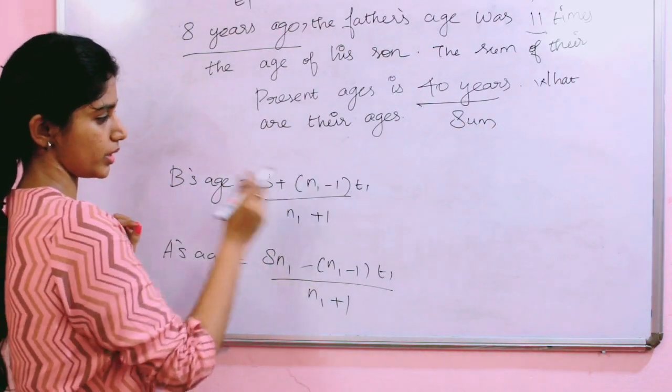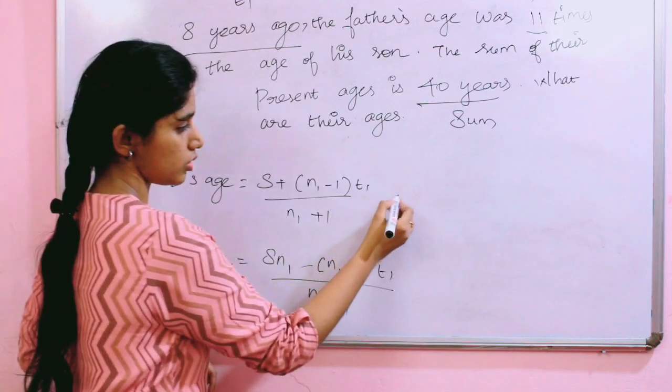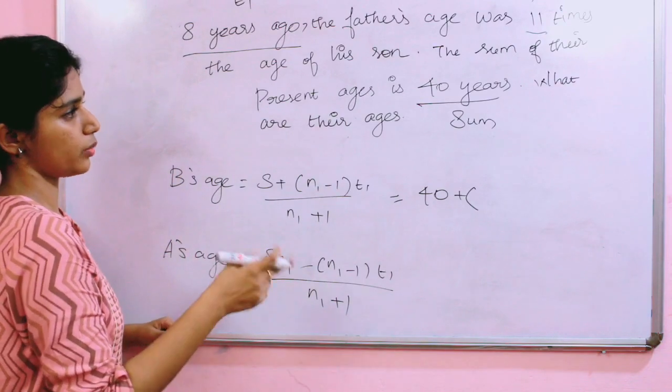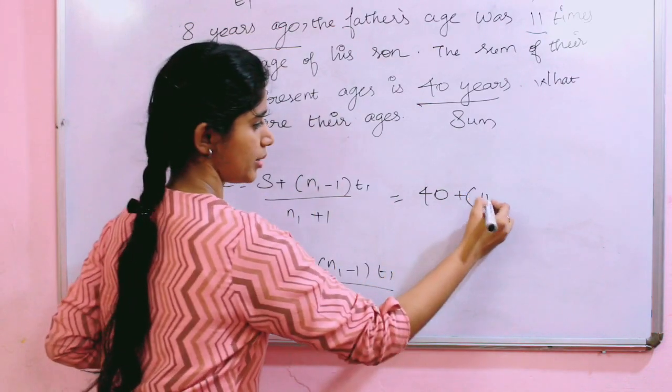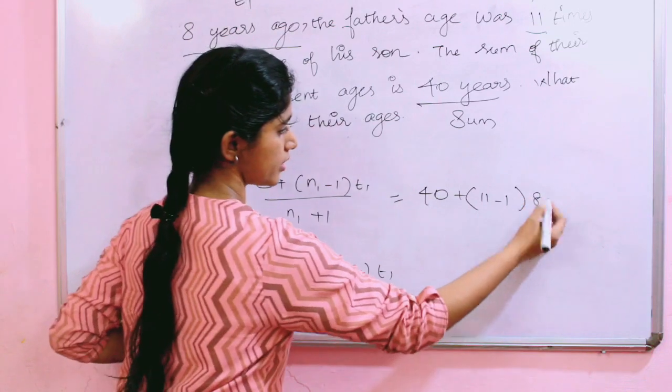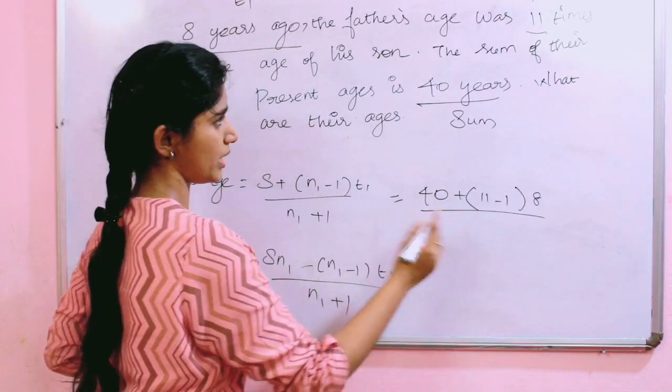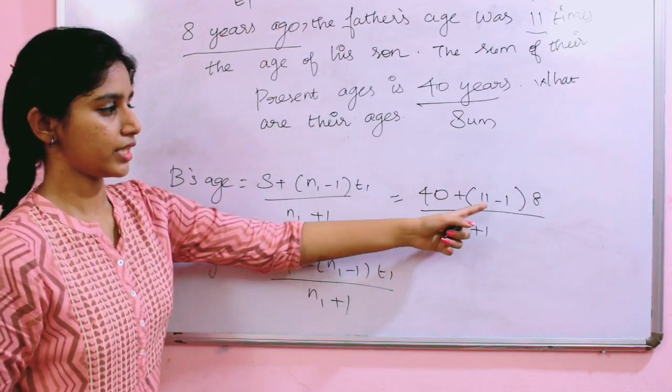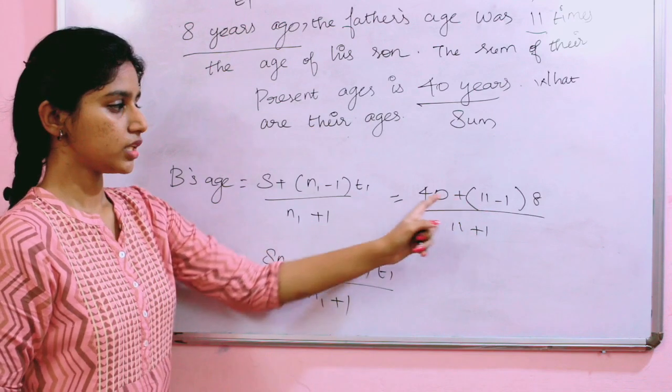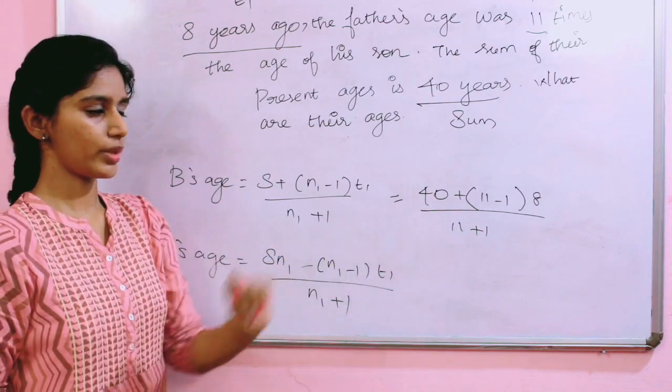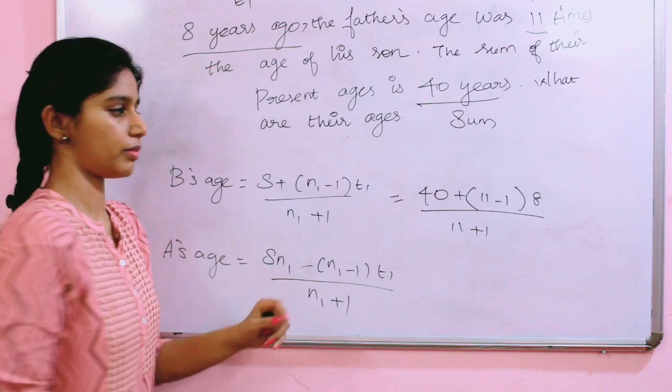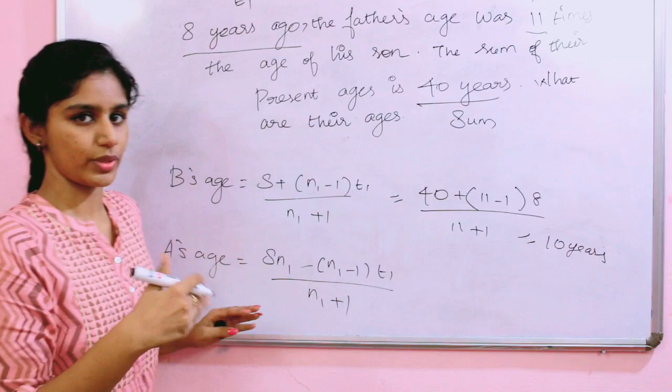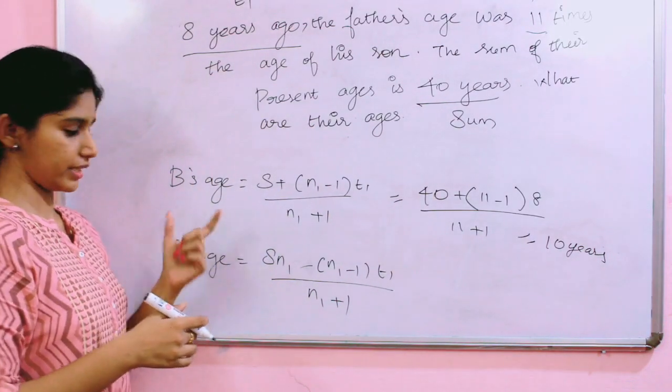B's age equals S plus (N1 minus 1) times T1. So, what is S here? 40 plus N1 minus 1. N1 means 11. So 11 minus 1 into T1 is 8, by N1 plus 1. 11 plus 1. 40 plus 10 into 8 is 80. So 80 plus 40 is 120, 120 by 12 equals 10 years. B's age is 10 years.